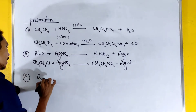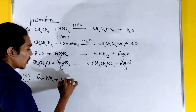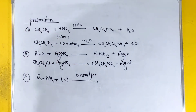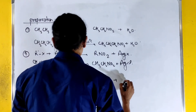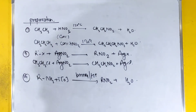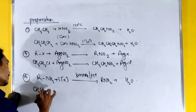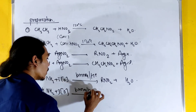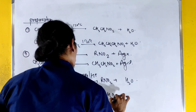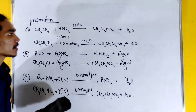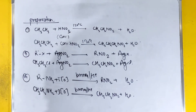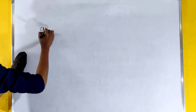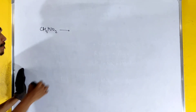For nomenclature: CH3NO2 is nitromethane. This is the simple concept of naming nitro compounds. For aromatic compounds, C6H5NO2 is nitrobenzene.